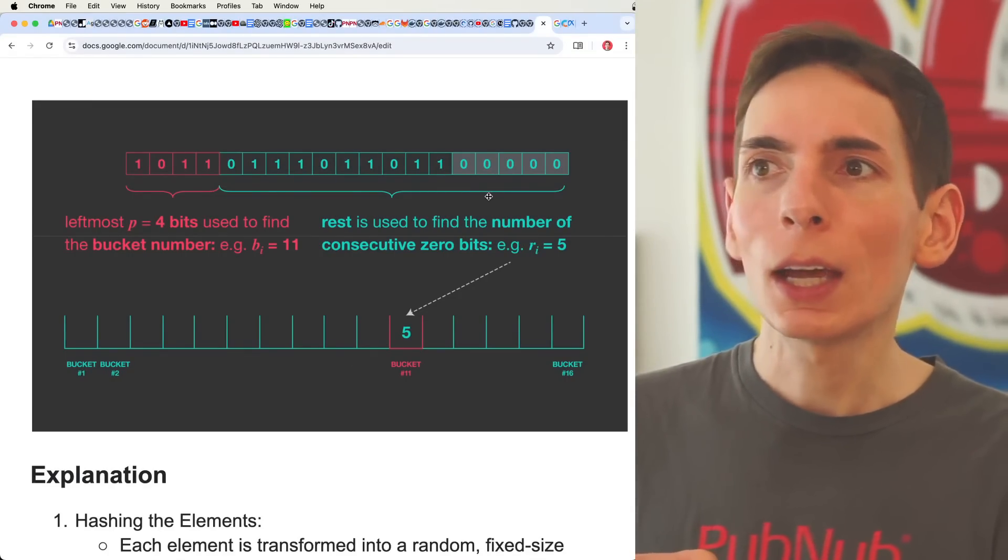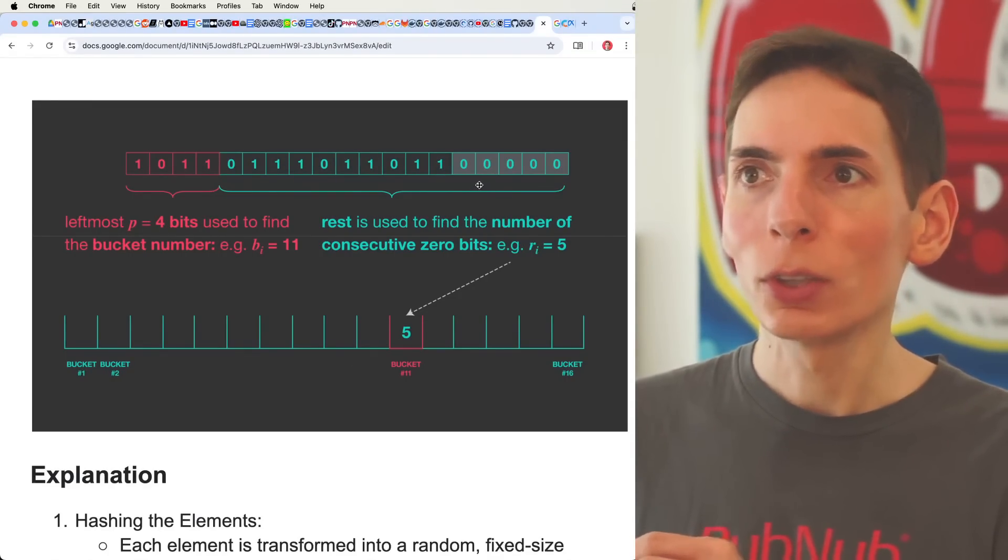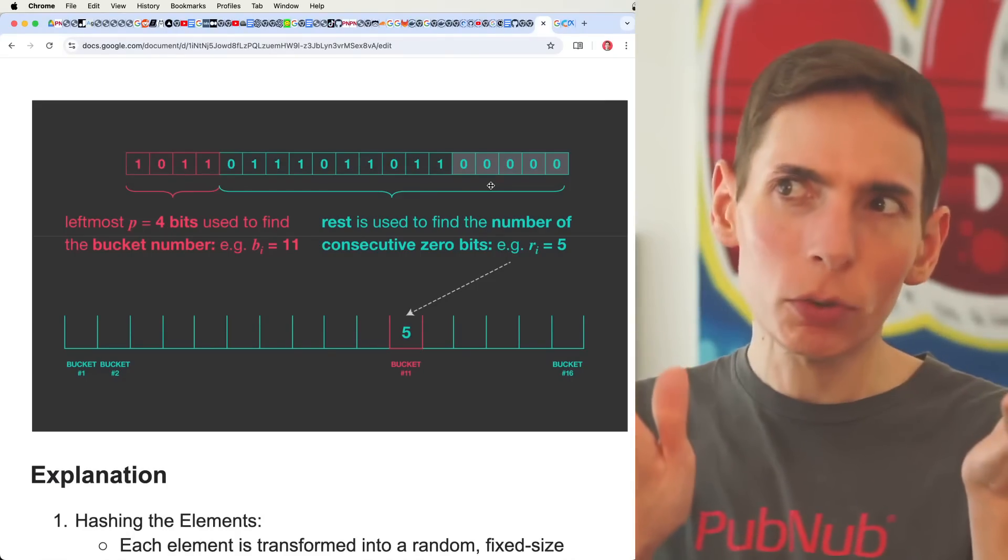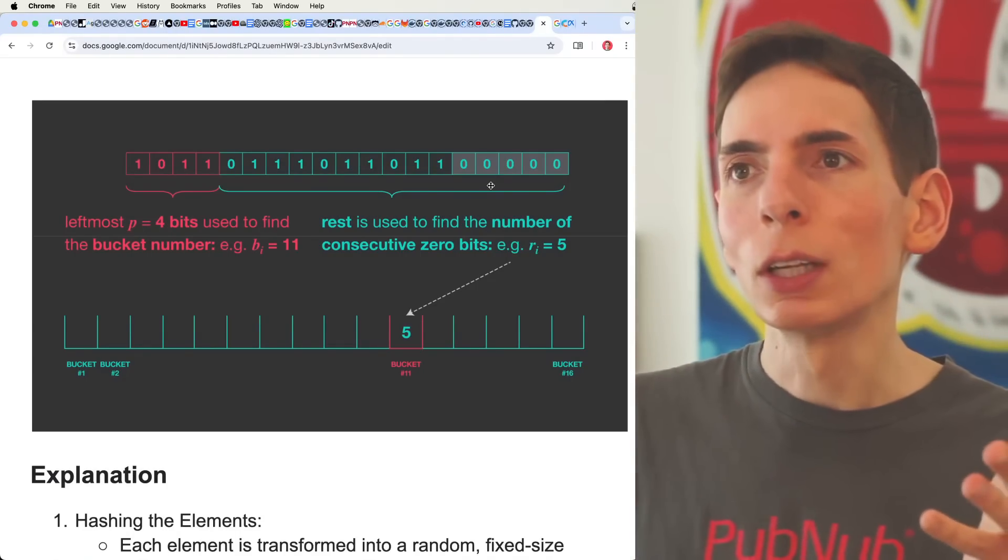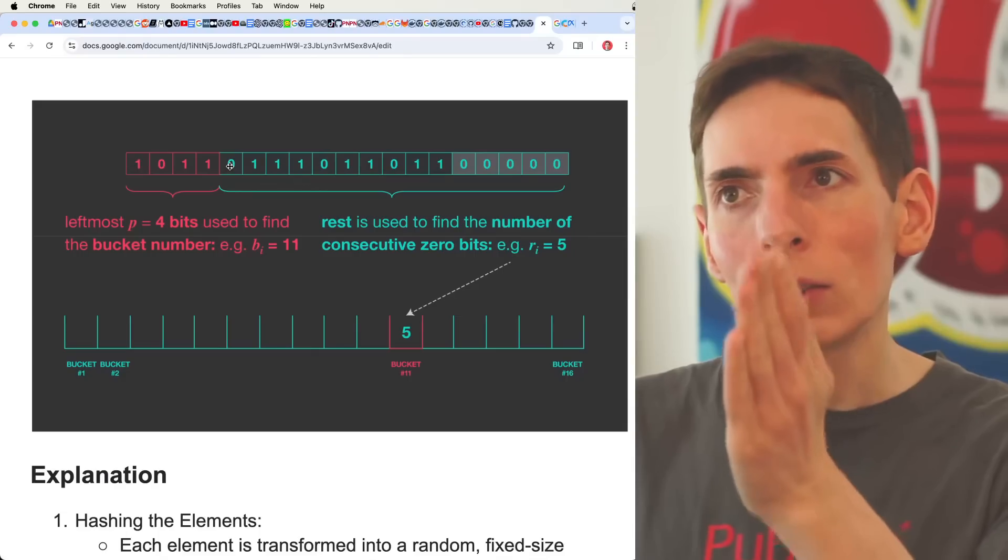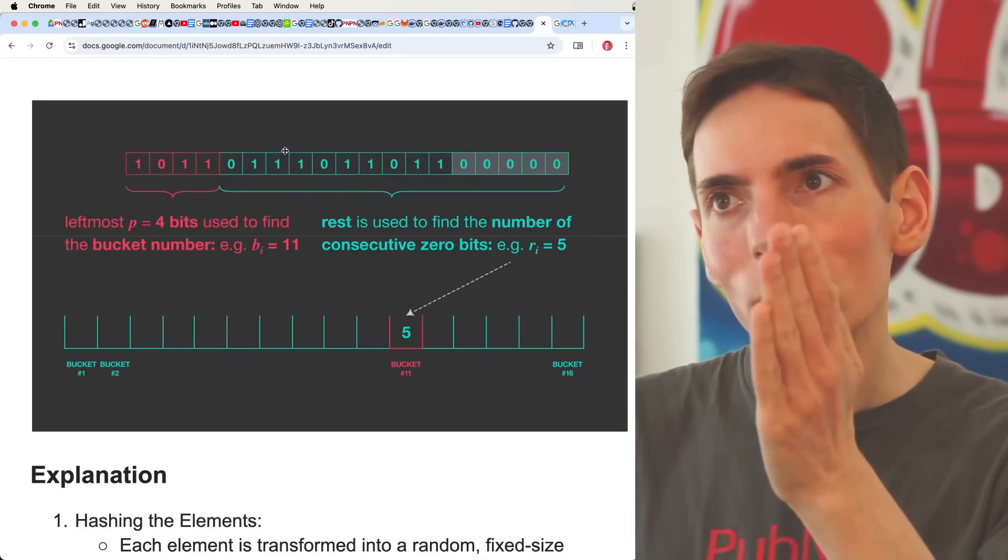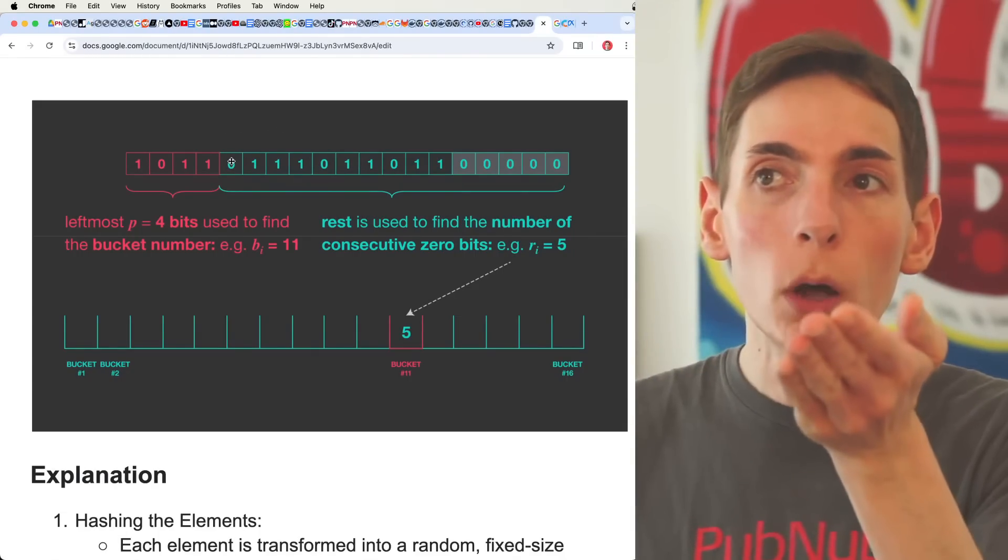And then we count the number of zeros. And you can do this in a bunch of different ways. You just want to count consecutive zeros. You can either do it from the leading here from this point forward, which in case would be one zero.